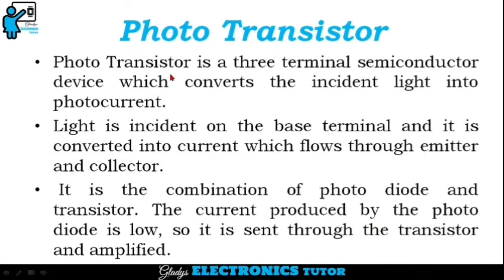A phototransistor is a three-terminal semiconductor device which converts the incident light into photocurrent. Light is incident on the base terminal and it is converted into current which flows through the emitter and collector.